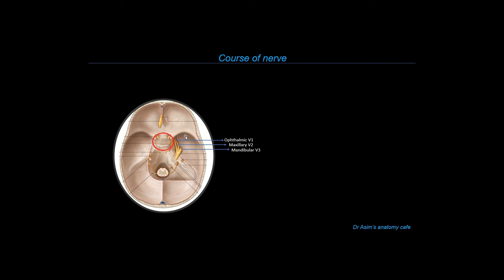The ophthalmic or V1 division of the trigeminal nerve passes through the superior orbital fissure to enter into the orbital cavity just underneath the orbital plate of the frontal bone. The V2 or maxillary division passes through foramen rotundum and then enters into the pterygopalatine fossa, while the V3 or mandibular division passes through foramen ovale to enter into the infratemporal fossa.